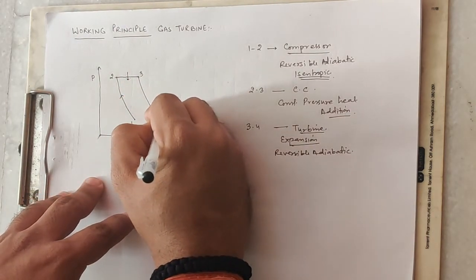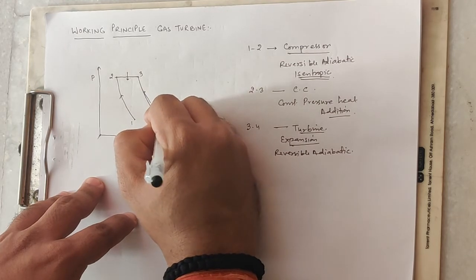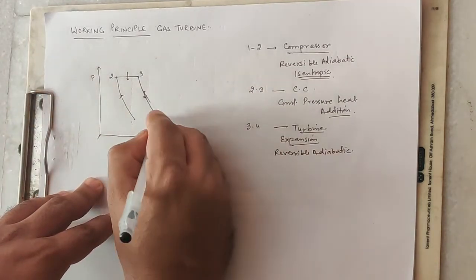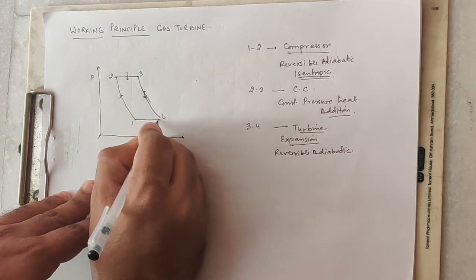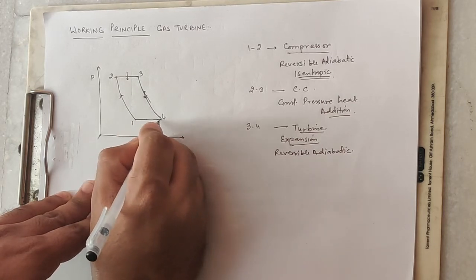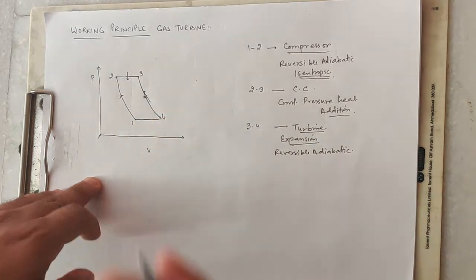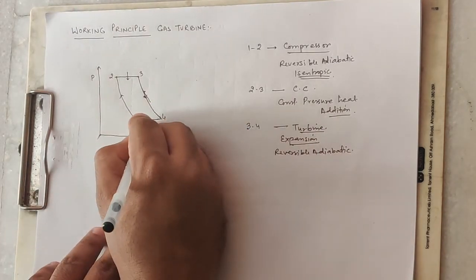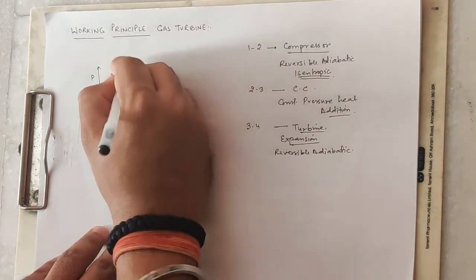The fourth process is heat rejection to the surroundings. If we have a heat exchanger, heat is exchanged there. This is the Q rejected process, while the earlier combustion chamber process is the Q supplied part. Work output is obtained from the turbine, and work is consumed in the compression process.